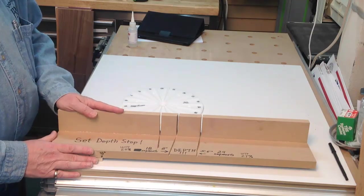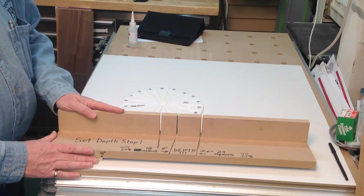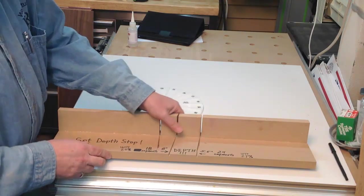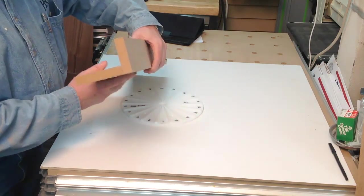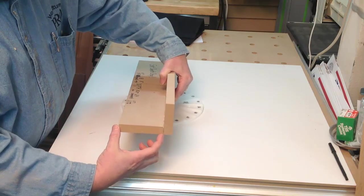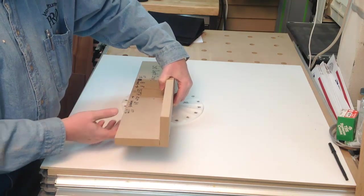By adding a zero clearance sled, it becomes a great solution for cutting segments. So here I've made a sled, and it's just made out of MDF. I've got two pieces of MDF. One of them is three inches, one of them is four inches. That dimension is not critical.